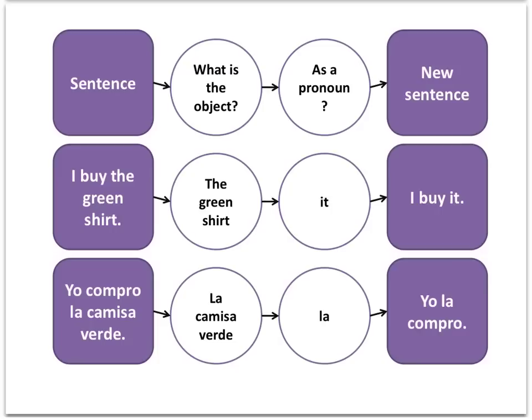Yo los compro. Let's do a little step-by-step analysis of what we just did. If I asked you to take a sentence, find the object, and replace it with a direct object pronoun, this is exactly what you would do. Step one: find your sentence. Then ask yourself, what's the object? Then, how can I replace it as a pronoun? And then you create your new sentence. Sounds easy — let's put it to practice in English first.